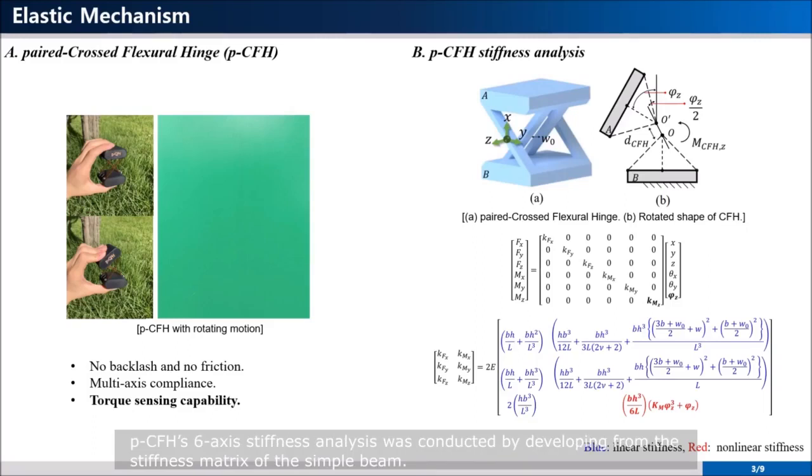PCFH's six-axis stiffness analysis was conducted by developing from the stiffness matrix of the simple beam. However, G-axis rotational stiffness has non-linear stiffness due to the large deformation, so it is derived differently based on the Elastica method.